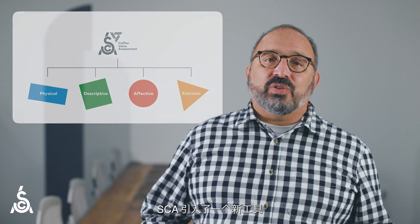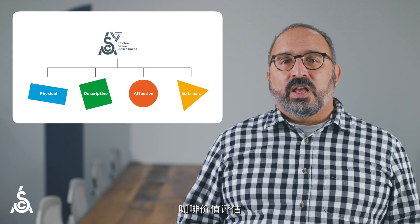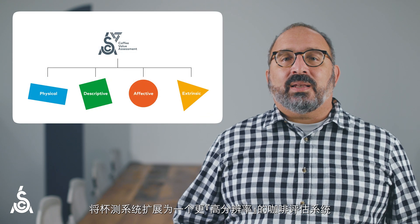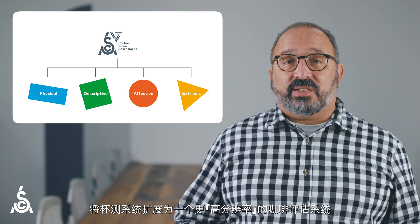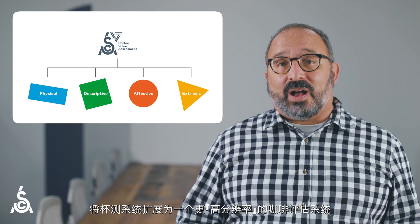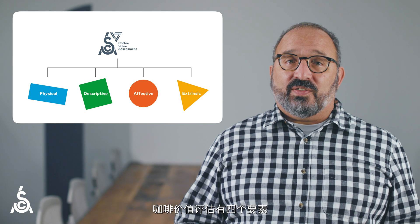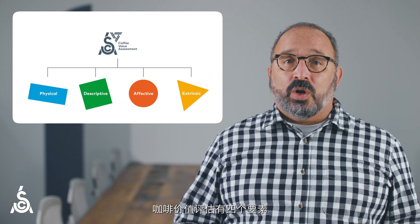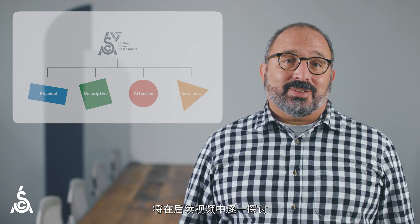So in 2023, the SCA introduced a new tool, the coffee value assessment, to expand the cupping system into a more high-resolution assessment system for coffee. There are four elements of the coffee value assessment, which we'll explore individually in subsequent videos. We'll see you next time.